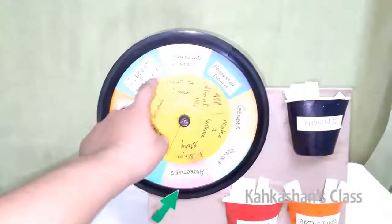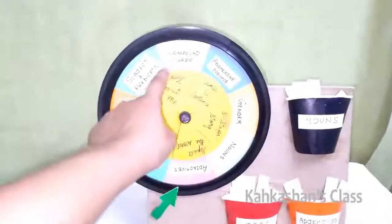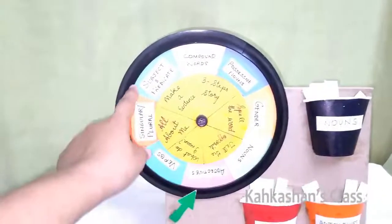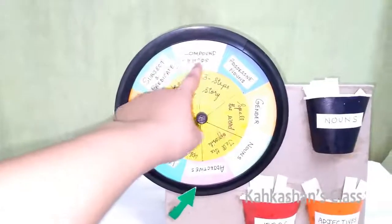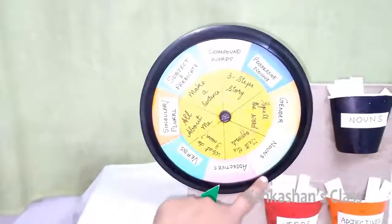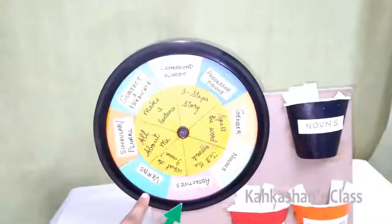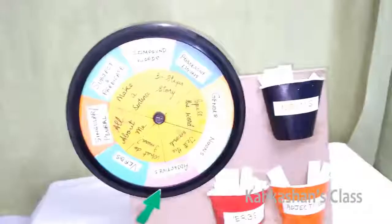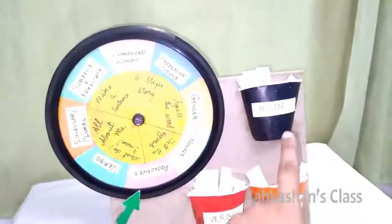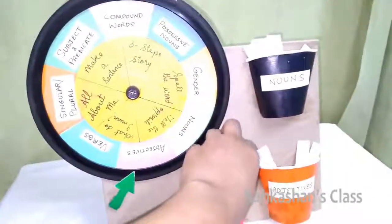Here are some of the options like tell the opposite, what do I mean, all about me, make a sentence, three-step story, spell the word. When you were doing the lessons, you had got many words.